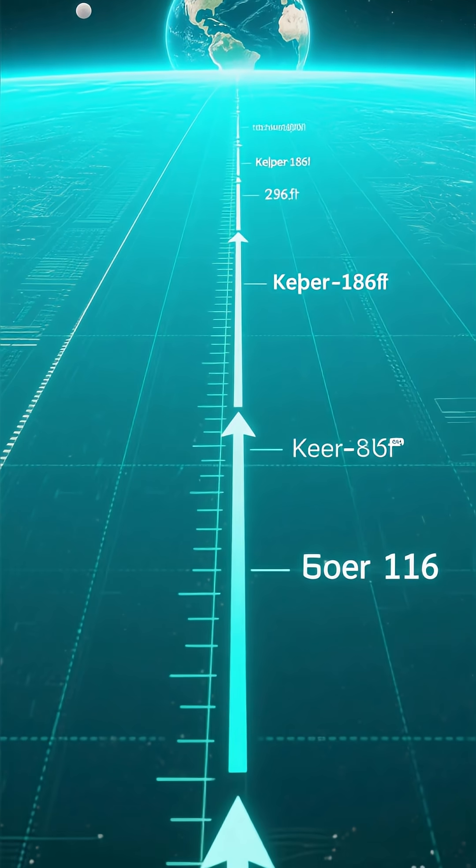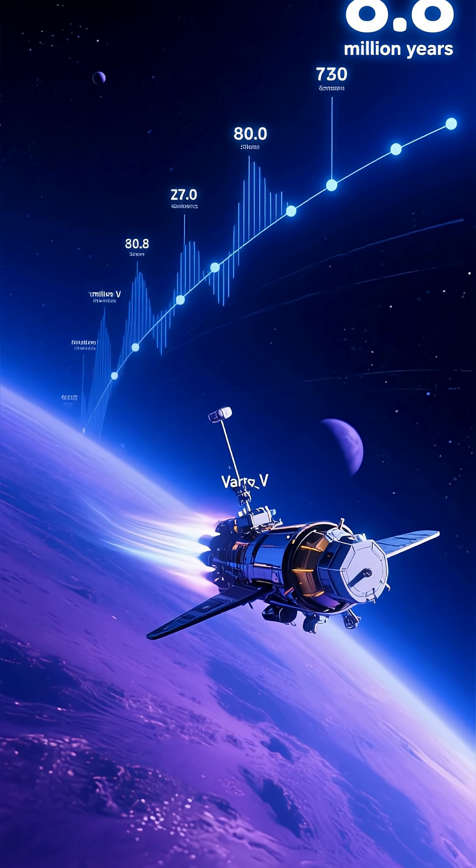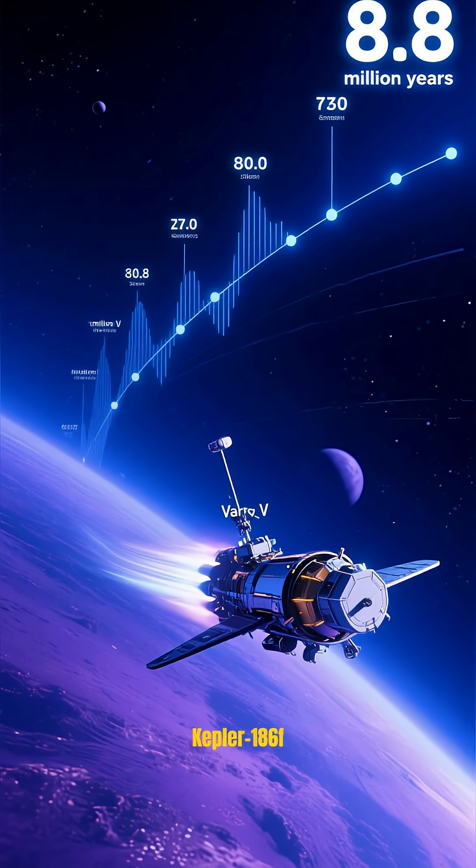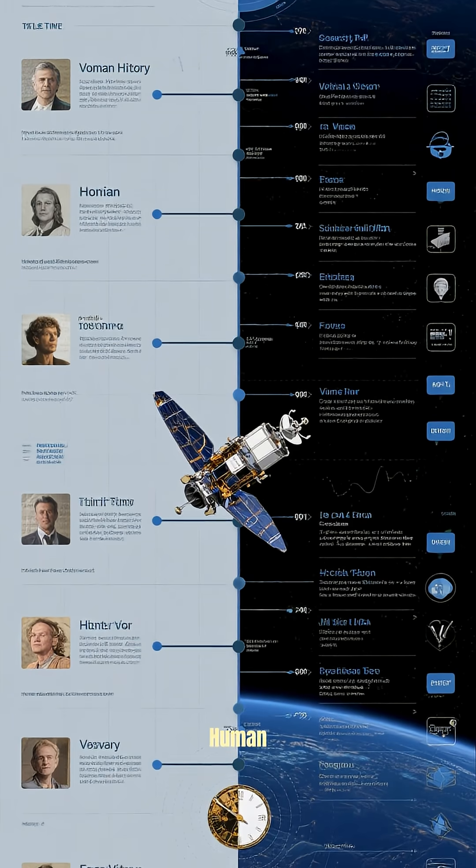The distance is, after all, staggering. If we were to send Voyager 1, the fastest spacecraft ever built by humanity, on a journey to Kepler-186f, it would take 8.8 million years to arrive. That's a journey longer than human history itself.